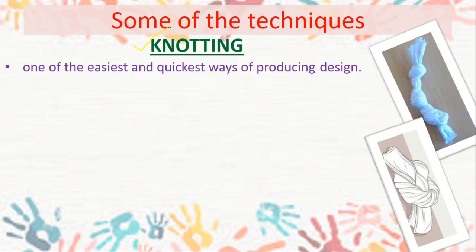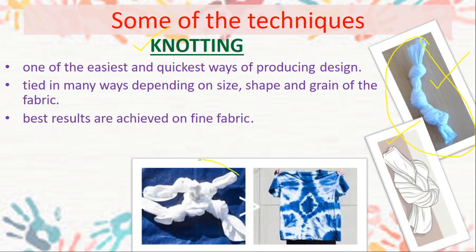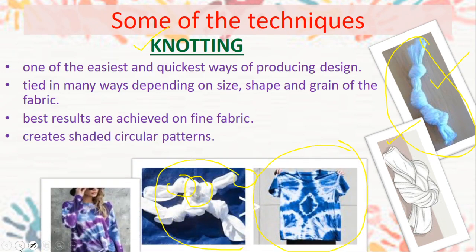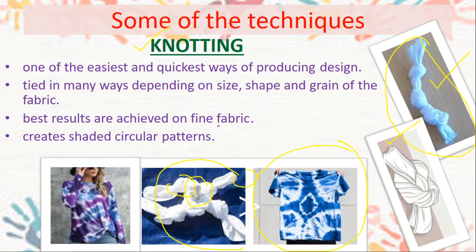Some of the techniques: the first one is knotting, which is perhaps the simplest and easiest. You just have to tie a knot in the fabric — there are many ways of tying knots. By tying five knots very tightly, you get a corresponding design on the fabric. The best results are achieved on fine fabrics — if the fabric is thin, the knot would be very tight and the effect would be nice. It creates a circular pattern.